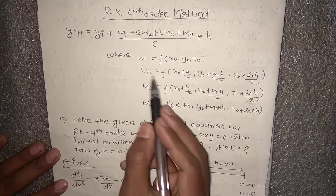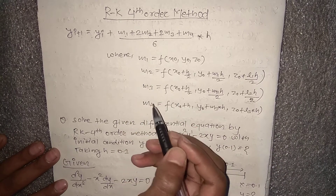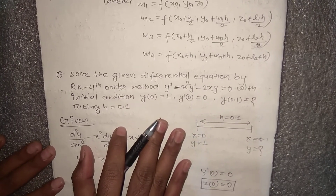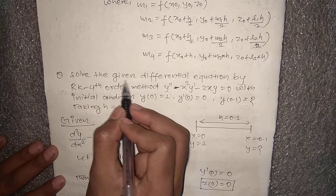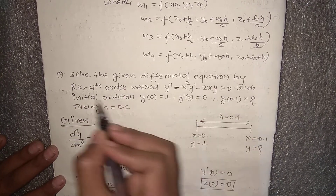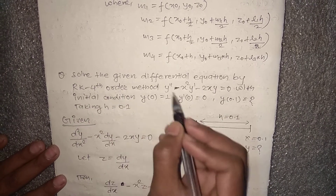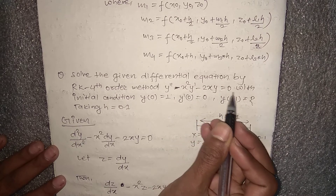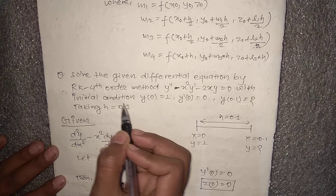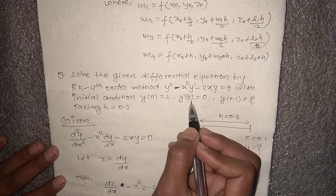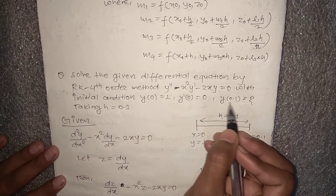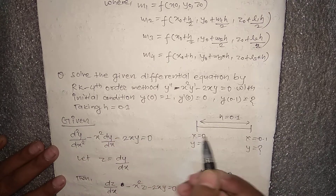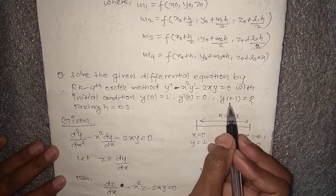Here we have the given problem: solve the differential equation by the RK4 order method. The equation is y'' = x²·y' − 2x·y = 0, with initial conditions y(0) = 1 and y'(0) = 0. We need to find y(0.1), taking step size h = 0.1.